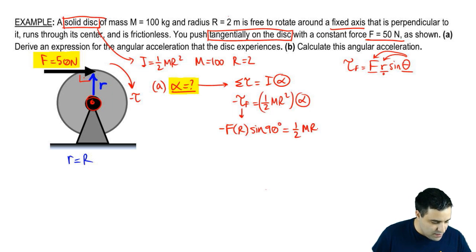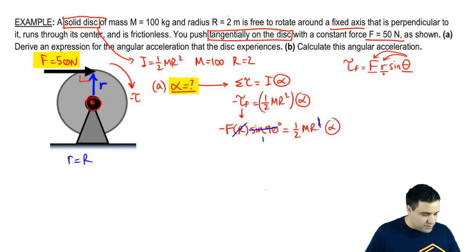That's what you get on the left side. Let's rewrite the right side again here. And you get this. This becomes sine of 90 becomes one. This R cancels with one of the two R's on the other side. And we're ready to go.